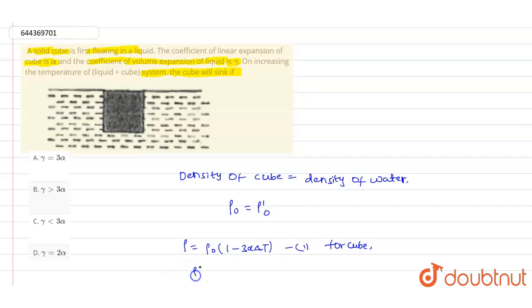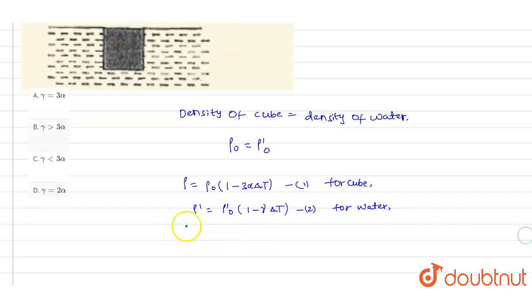And ρ' will be equals to ρ'₀ into 1 minus γΔt. This is equation number two and this is for the water. Already I have told you that ρ'₀ is the representation of the water and simply ρ is the representation of the cube.